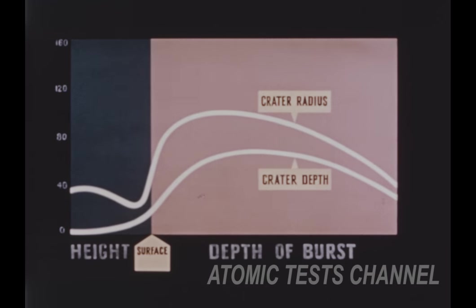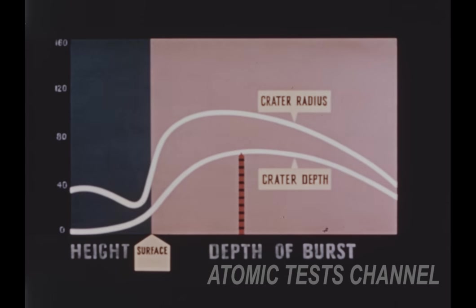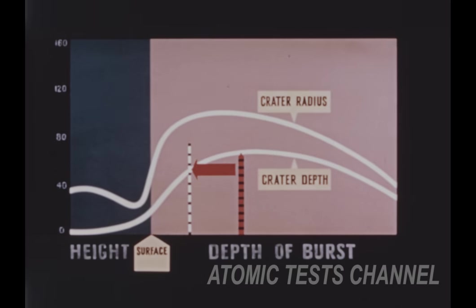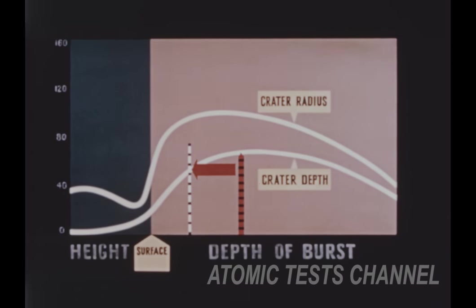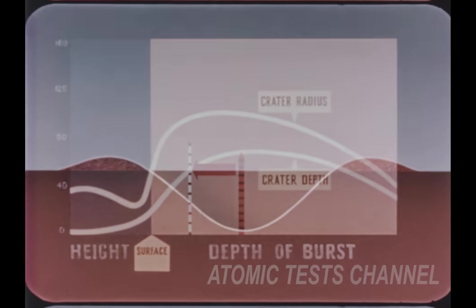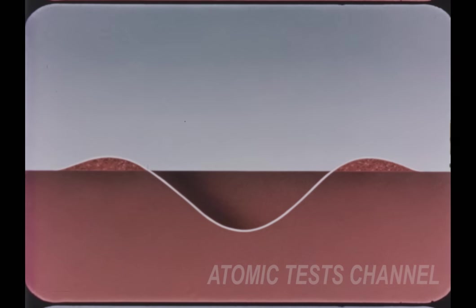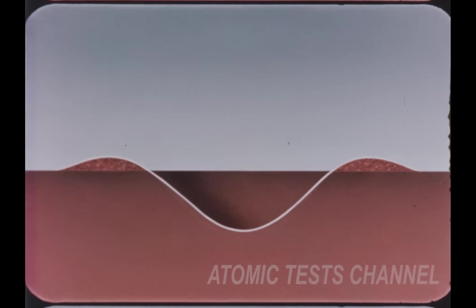Whereas a burst depth as shallow as 20 feet gives us close to a maximum crater radius, it gives only a little more than half of the maximum possible crater depth for this yield. To get maximum crater depth for one kiloton, we should need a burst depth near 100 feet, which is double our previously selected 50-foot depth. In practice, under field conditions and with weapons larger than a kiloton, we are seldom going to obtain the maximum possible crater depths.